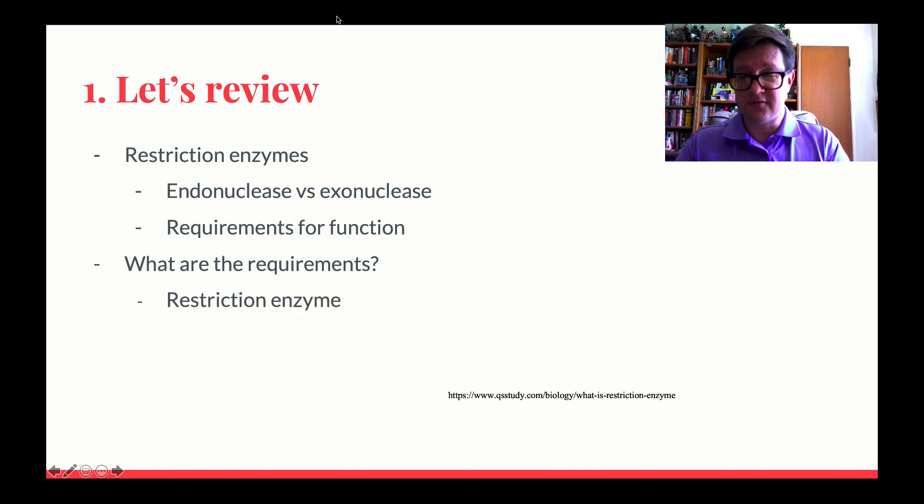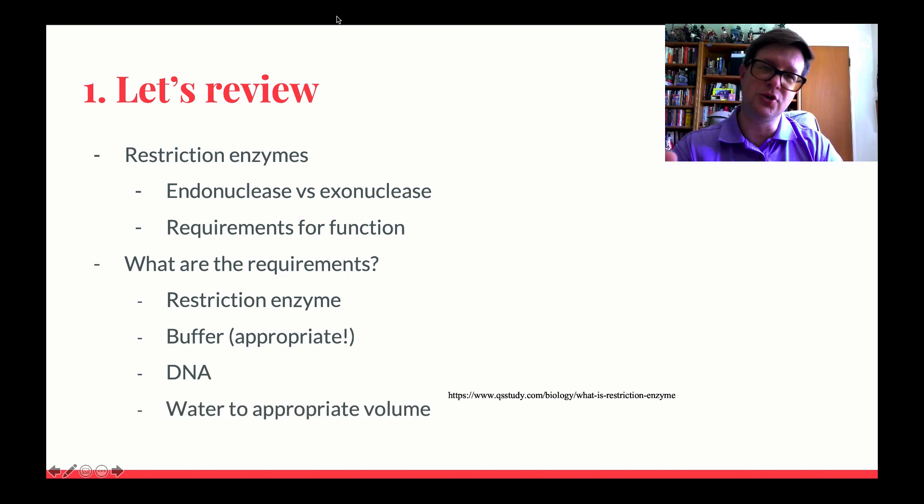That's why in that lab you had some of your gels that turned out to be total digest and some that turned out to be partial digest, and that's because you didn't give them the correct environment. So what are those requirements? Of course, if you're going to run a restriction digestion, you need to make sure that you have the enzyme. Make sure you give the correct buffer. We need to make sure that you also add some DNA, and we usually put these to the same volume every single time. So we usually add water as is appropriate.